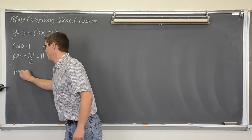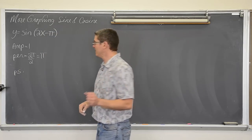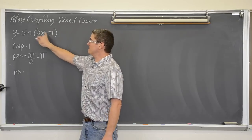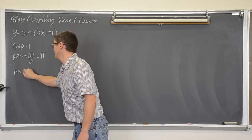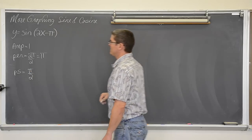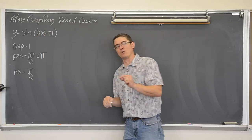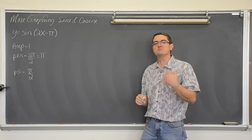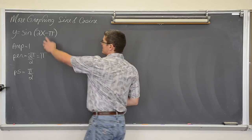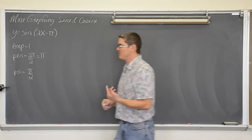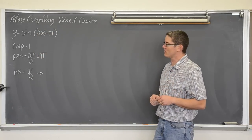The phase shift, which I am just going to write as PS, is left to right horizontal movement, and it is going to be c divided by b, so it is going to be π over 2. Because we have a minus sign in our parenthesis — which is standard form: a times trig function of (bx minus c) plus d — that minus sign means the phase shift is a movement to the right, so the graph gets moved π over 2 units to the right.